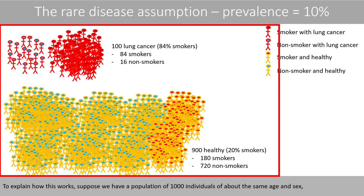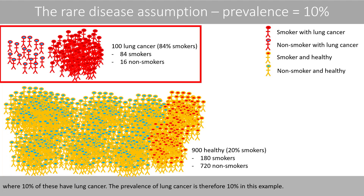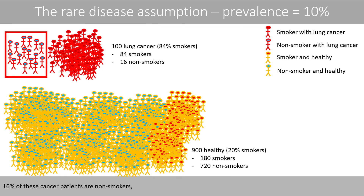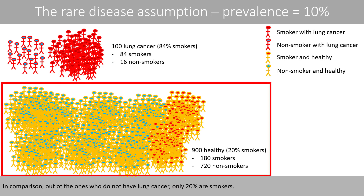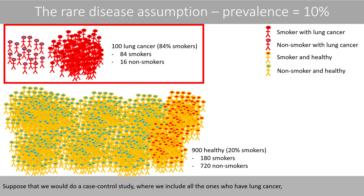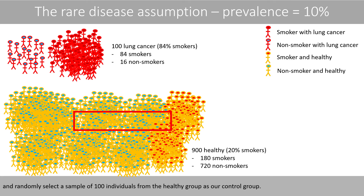To explain how this works, suppose that we have a population of 1,000 individuals of about the same age and sex, where 10% of these have lung cancer. The prevalence of lung cancer is therefore 10% in this example. 16% of these cancer patients are non-smokers and 84% are smokers. In comparison, out of the ones who do not have lung cancer, only 20% are smokers. Suppose that we would do a case-control study, where we include all the ones who have lung cancer and randomly select a sample of 100 individuals from the healthy group as our control group.